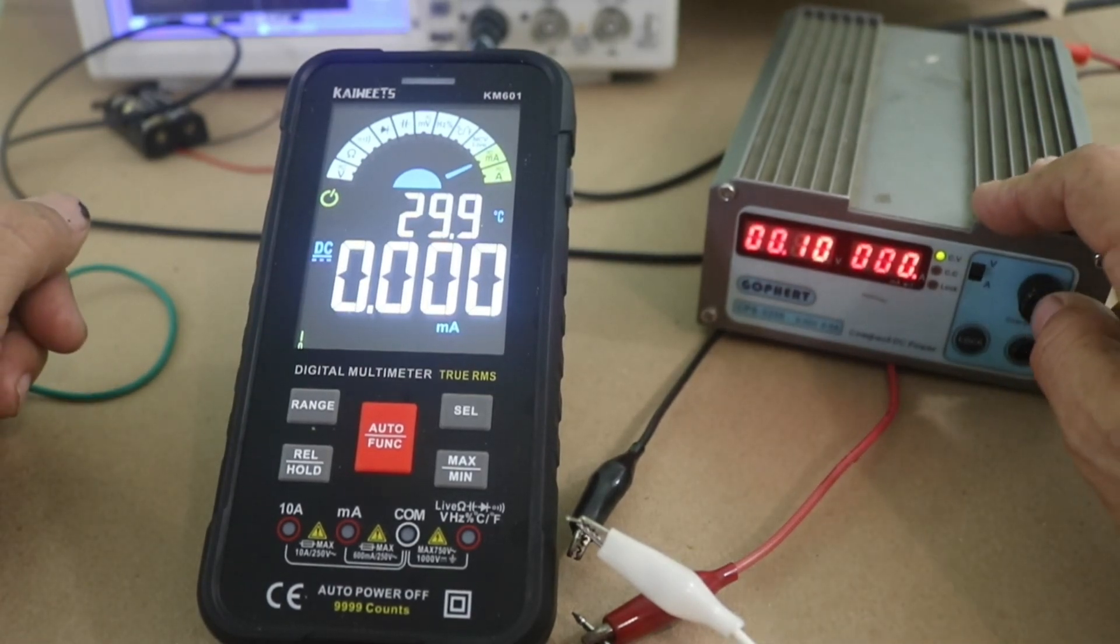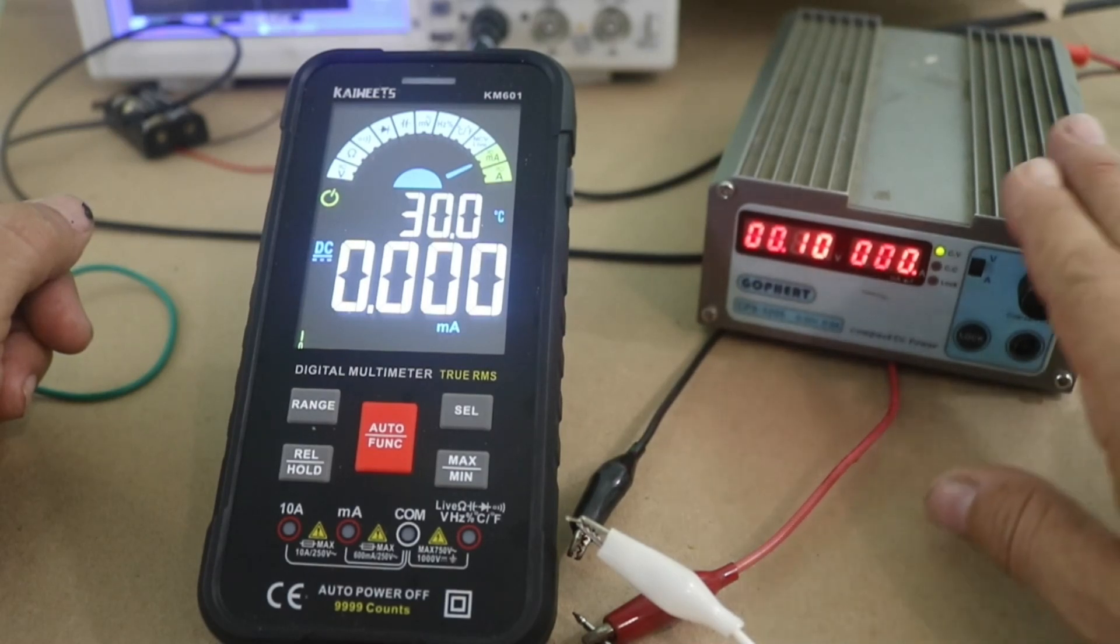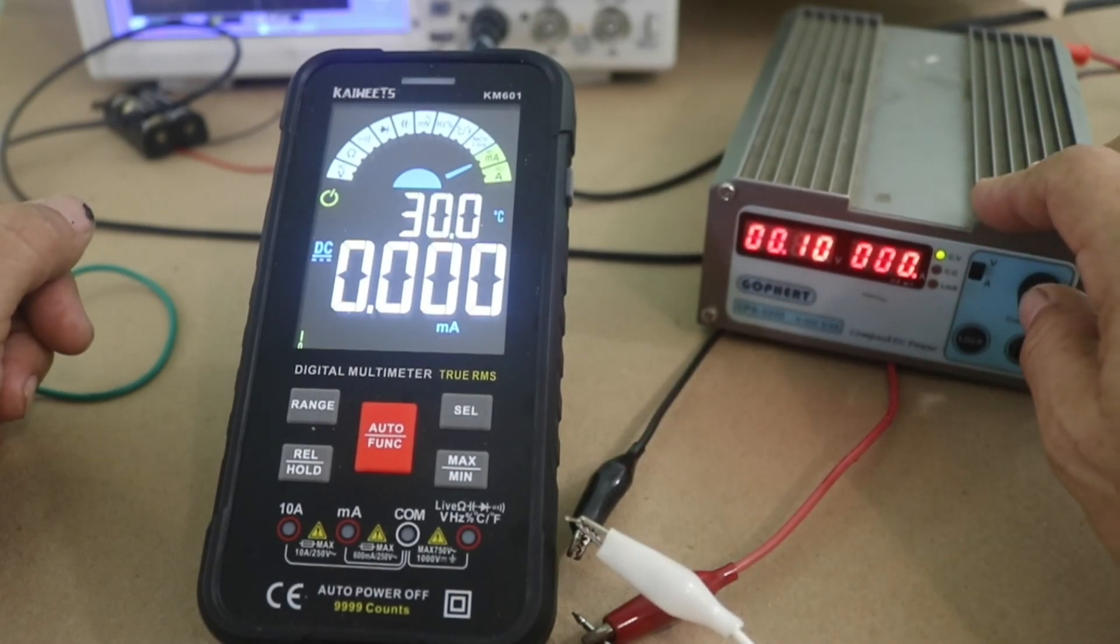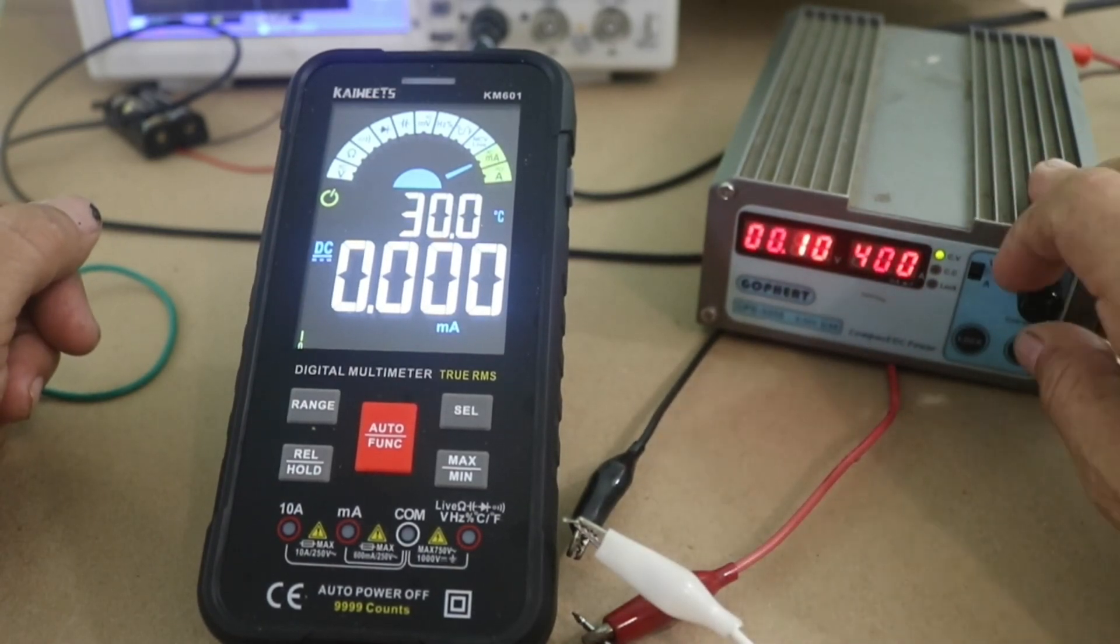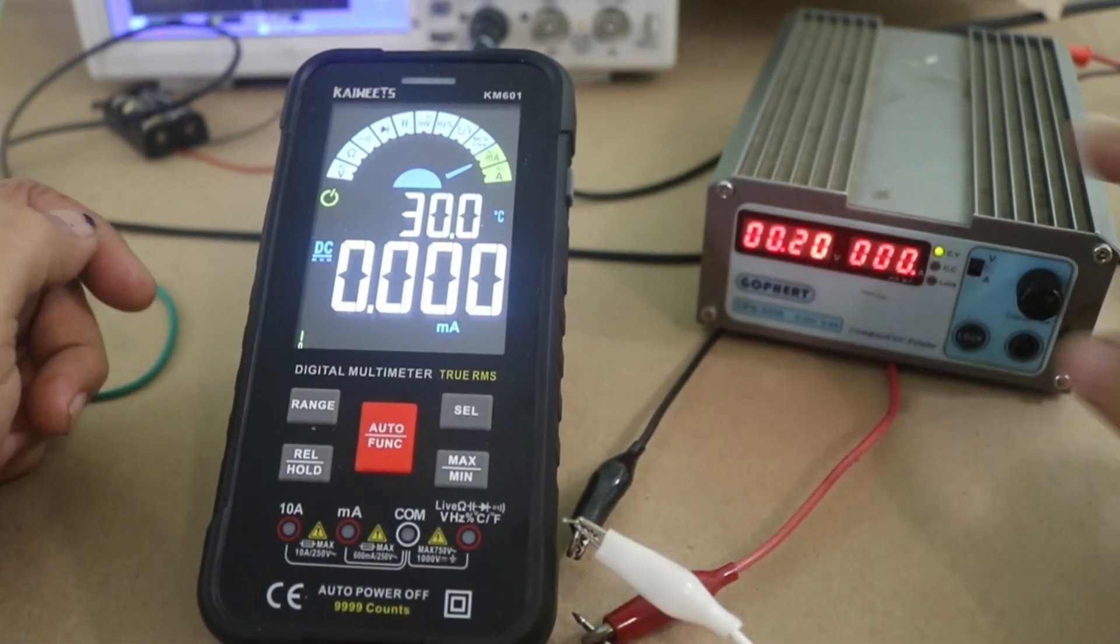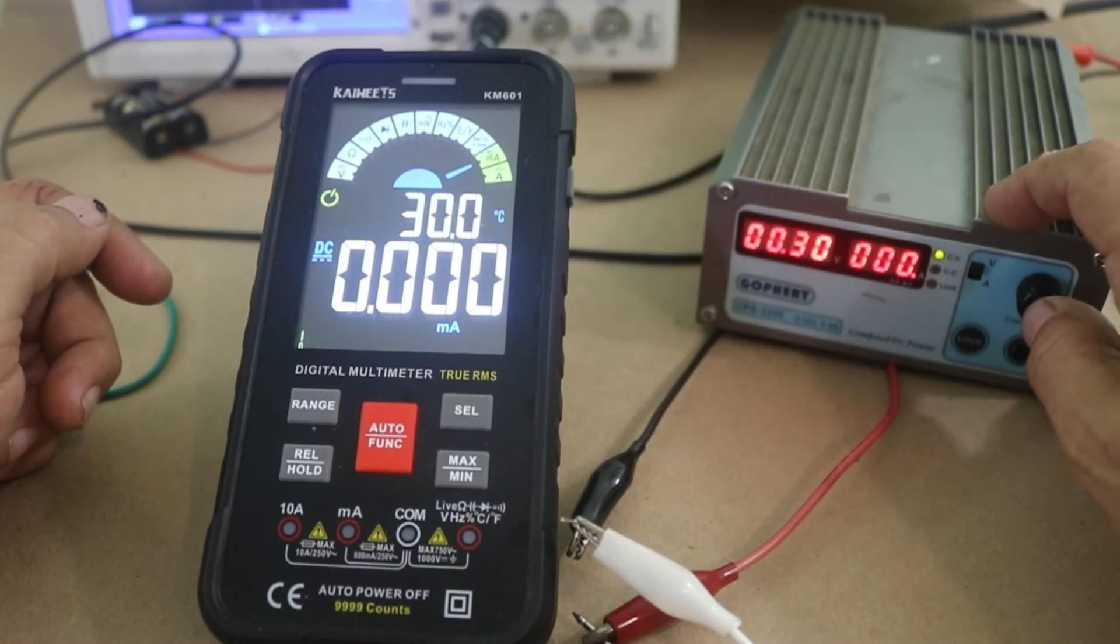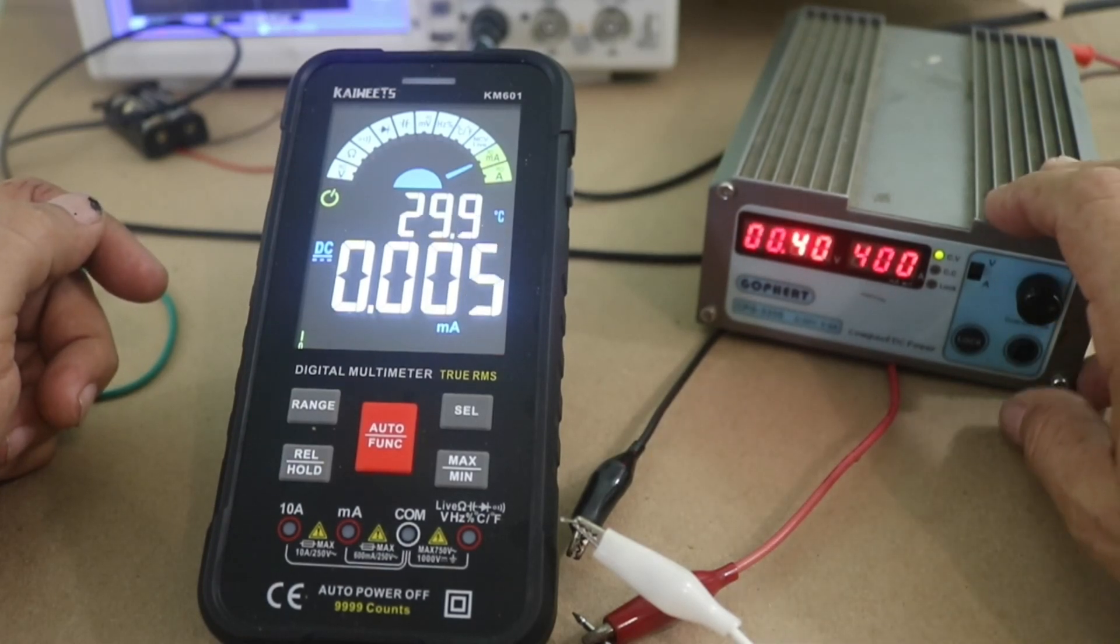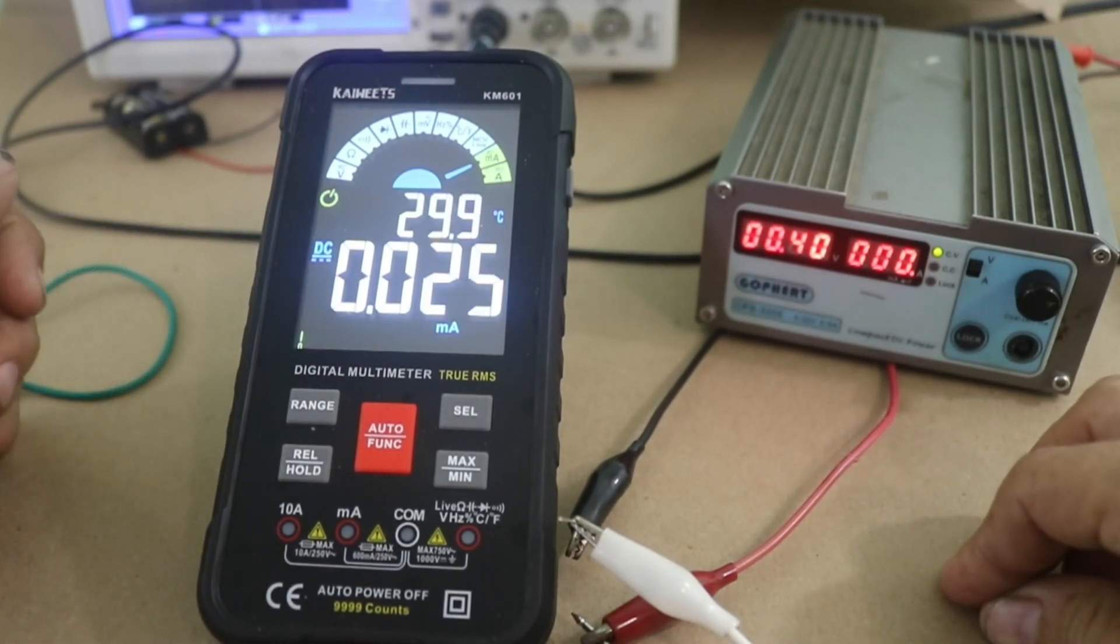I am going to raise the voltage and I have the current limited to 400 milliamps in order not to fry the diode when it starts to conduct the current. 0.2 volts, still no current flow. 0.3, nothing. 0.4 volts and we see a very small current flow.